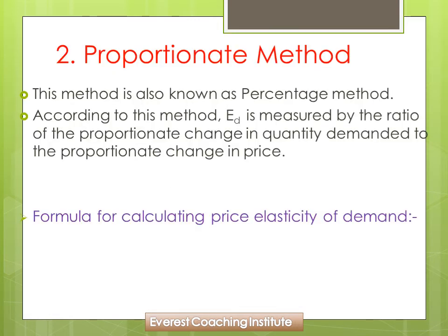Ab aata hai proportionate method — dusra method. Proportionate method ko hum percentage method bhi bolte hain. According to this method, elasticity of demand is measured by the ratio of proportionate change in quantity demanded to the proportionate change in price. Quantity demanded aur price mein kya proportion mein change aa raha hai — wo hum proportionate method mein discuss karte hain.